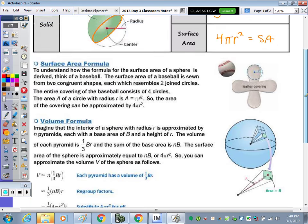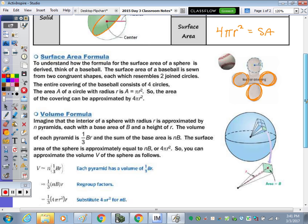To understand how the formula for the surface area of a sphere is derived, think of a baseball. The surface area of a baseball is sewn from two congruent shapes, each which resembles two joined circles. So together, the entire covering of the baseball consists of four circles, and the area of one is going to be πr², so the area of the whole covering itself is approximately 4πr².